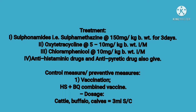For control and preventive measures of HS: vaccination using HS plus BQ combined vaccine. Dose for cattle and buffaloes is 3 ml SC. For the HS single vaccine, 5 to 10 ml SC for large animals and 3 to 5 ml SC for small animals.